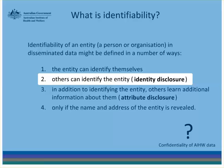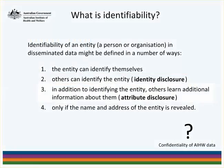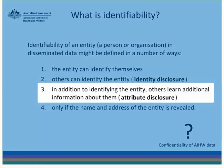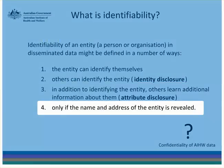Identity disclosure is the approach used by many government organisations. The third definition is that in addition to identifying the entity, others must learn additional information about them — this is known as attribute disclosure. The fourth possible definition is that an entity is identified only if the name and address of the entity is revealed.